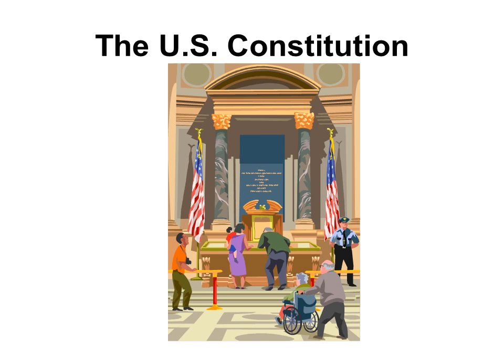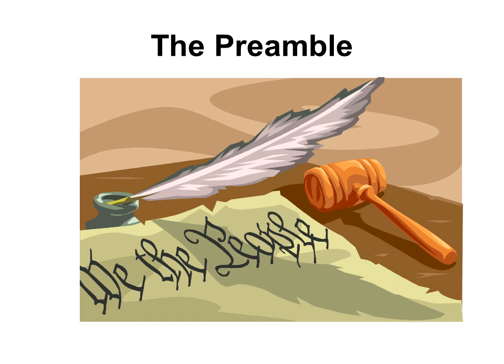The Constitution sets up the government, defines the government, and protects the basic rights of Americans. The idea of self-government is in the first three words of the Constitution. These words are: We the people.